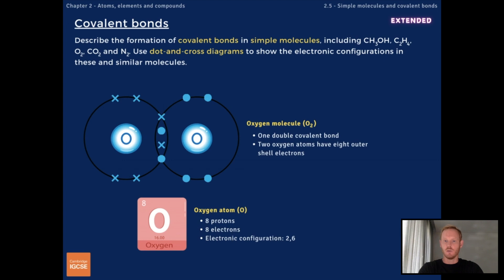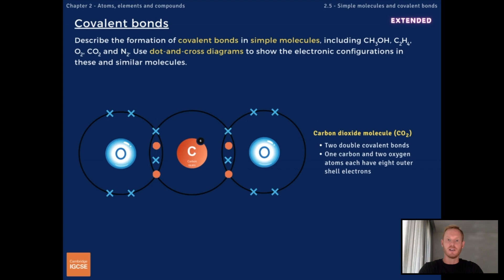Next, we have oxygen, which also involves a double bond. Two pairs of electrons are shared between two oxygen atoms, resulting in a stable O2 molecule. Carbon dioxide, or CO2, has two double bonds. One carbon atom shares two pairs of electrons with two oxygen atoms, leaving all three atoms with a full outer shell.